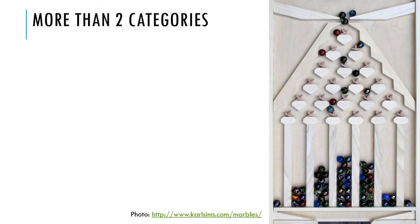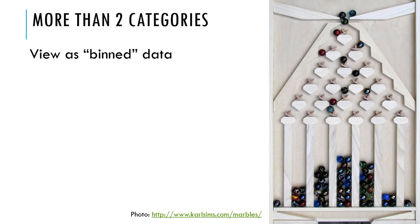So when you have more than two categories, you have a situation kind of like a little machine that has marbles dropping into it. We talk about the data as being binned, or count data in different categories. We're just going to end up counting the number of observations that end up in each category. So if you have a variable that has three or four different categories, you just count the number of people or individuals who fall in each of those categories.